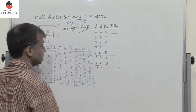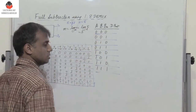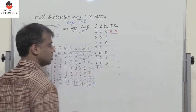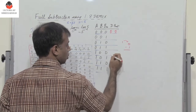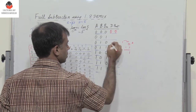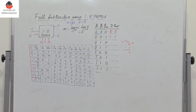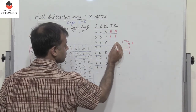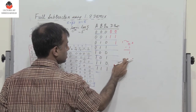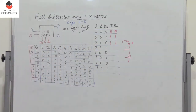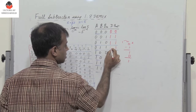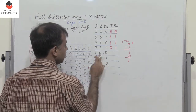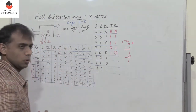For the first case, 0 minus 0 is 0, so difference is 0 and borrow out is 0. Next, 0 minus 1 requires a borrow — borrowing 1 makes it 2 minus 1, giving difference 1 and borrow out 1. Then 0 minus 1 again needs a borrow, giving difference 1 with borrow 1. For 0 minus 1 with borrow in 1, we get 1 minus 1 equals 0, so difference is 0. For 1 minus 0, difference is 1 with no borrow, giving 1,0.